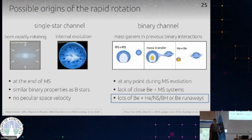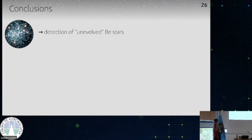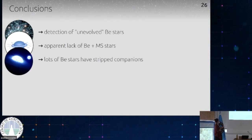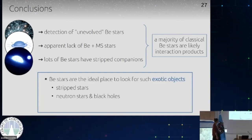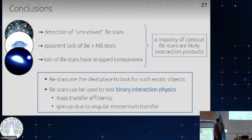So in summary, there are three arguments: we have detected a lot of unevolved BE stars; there is an apparent lack of BE stars with main sequence companions; and a lot of BE stars have stripped companions or compact companions. It seems like the binary channel forms a lot of them, which is exciting because it means they should have companions that are stripped stars or compact objects — allowing us to test binary interaction physics. We've done this for one system so far, but it's only one.